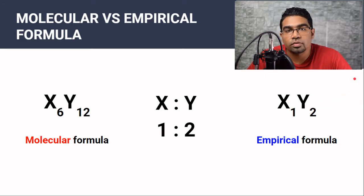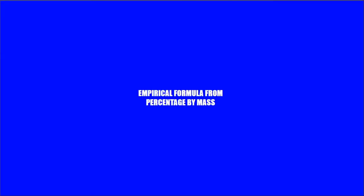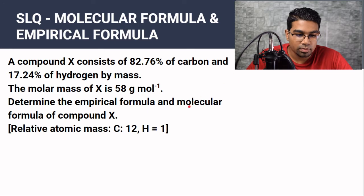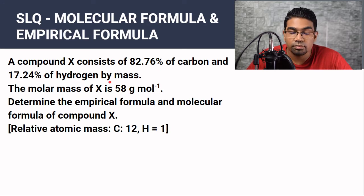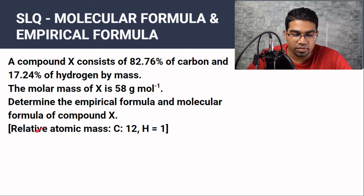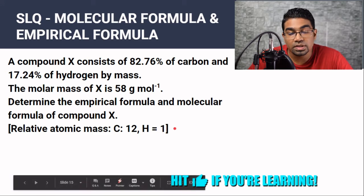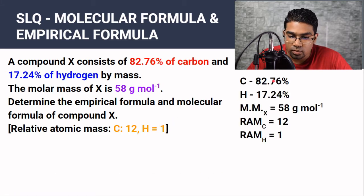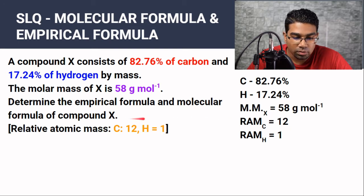What if you are asked to find the molecular formula and empirical formula based on just the percentage mass of the elements in the compound? A compound X consists of 82.76% carbon and 17.24% hydrogen by mass. The molar mass of X is 58 grams per mole. The relative atomic masses given are carbon = 12 and hydrogen = 1.